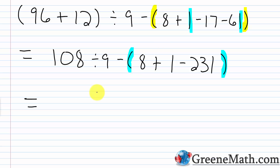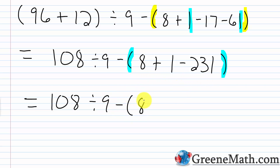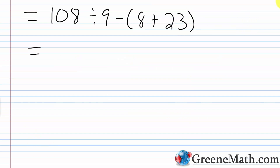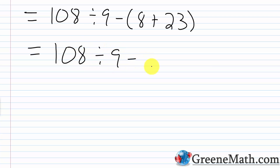So we would have 108 divided by 9, minus, and then inside of parentheses, we have 8 plus 23. The absolute value of negative 23 is 23. Continuing inside of the parentheses, 8 plus 23 is 31. So we'd have 108 divided by 9, minus 31.